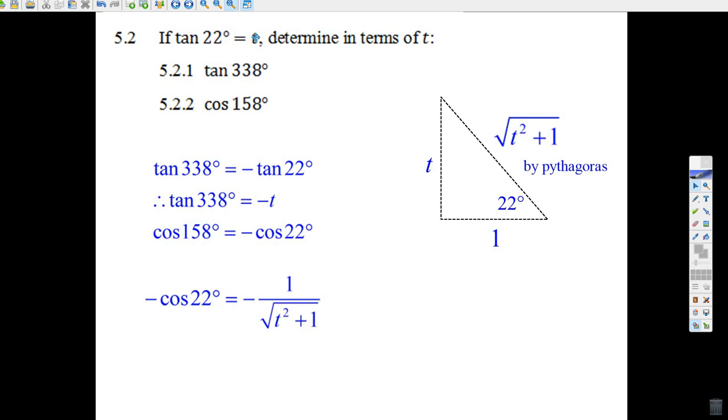So we're going to draw a triangle, but the opposite side is t, and the adjacent side is 1. Tangent is opposite over adjacent.